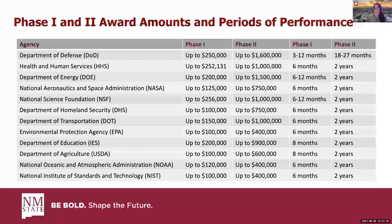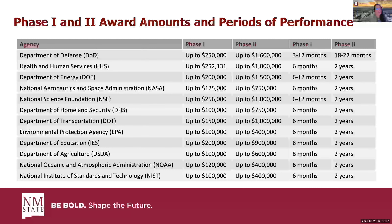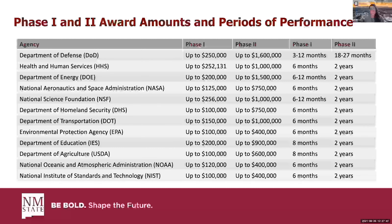This table shows the phase one and phase two award amounts and period of performance you can expect. This changes quite often, but you can see phase ones vary from about $100K all the way up to $250K, whereas phase twos are much higher, starting around $400K going all the way up to about $1.6 million.